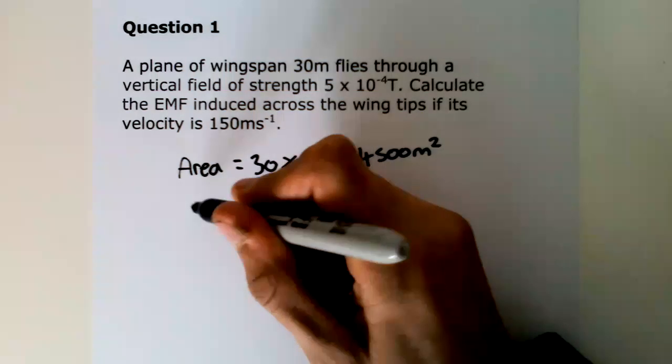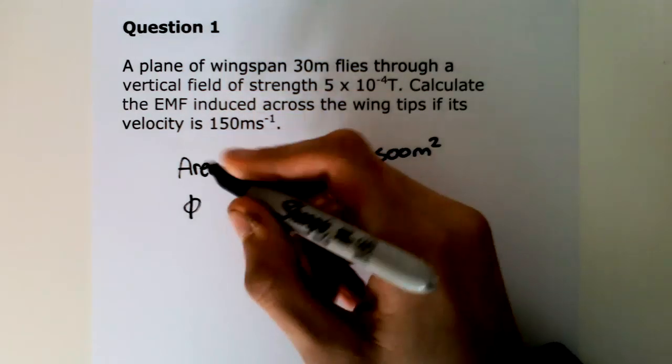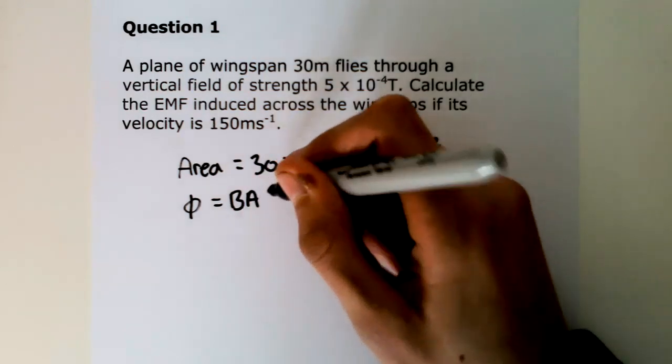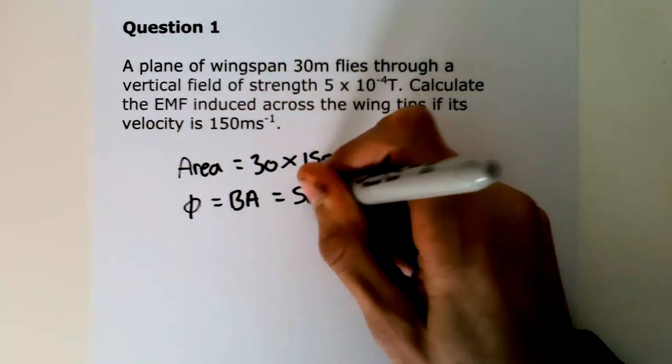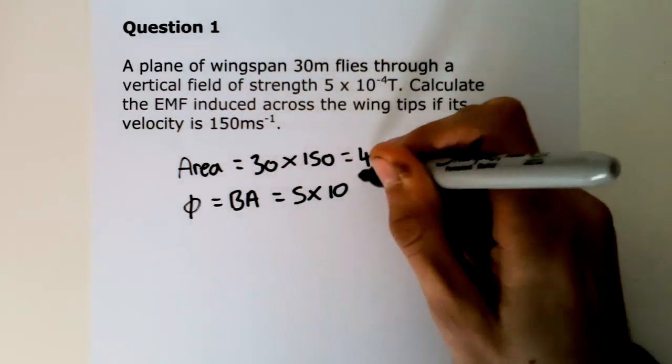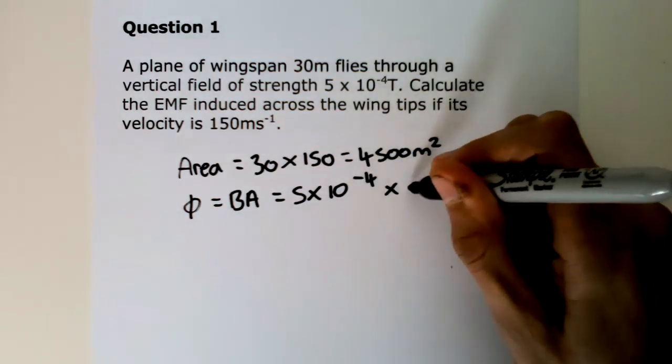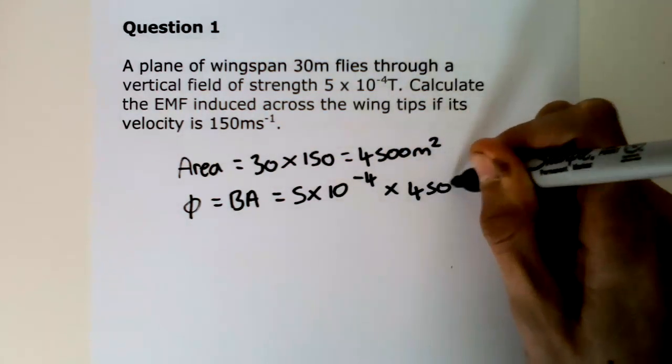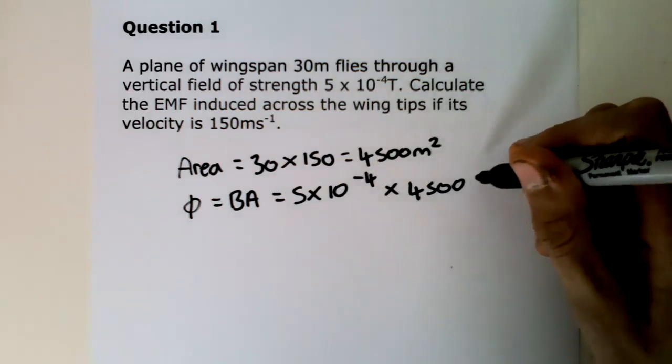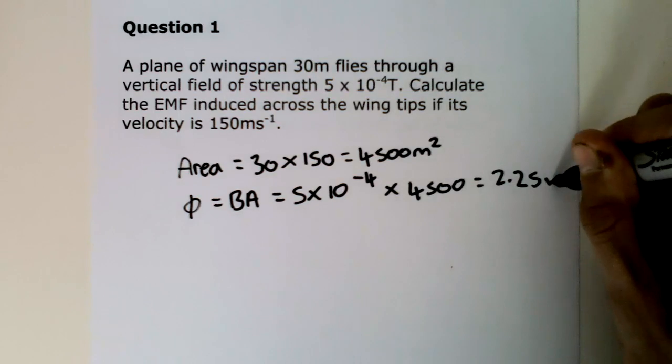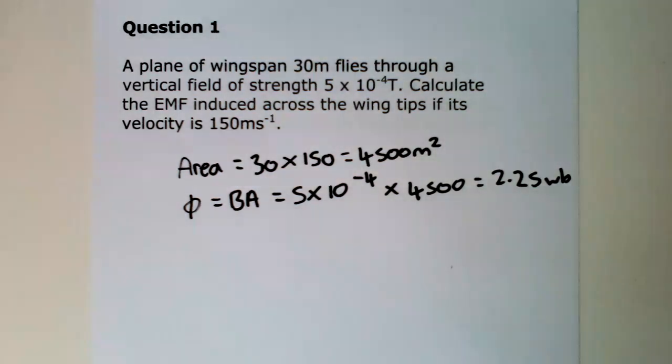So the flux is equal to B times A, which is also equal to 5 times 10 to the minus 4 times 4,500, which is equal to 2.25 Wb. So each second 2.25 Wb of flux is swept out.